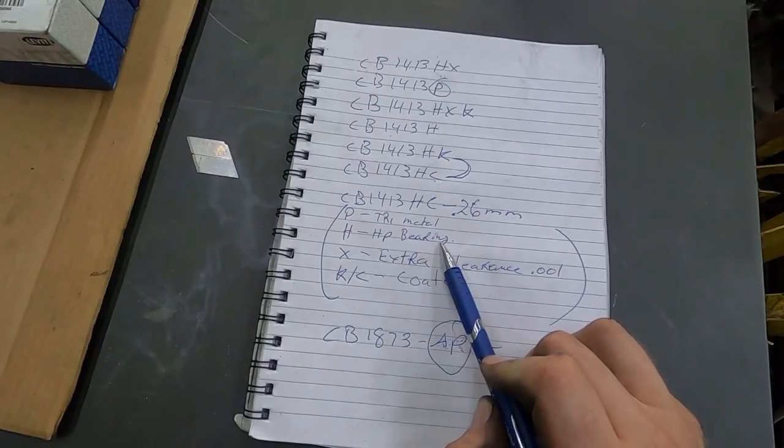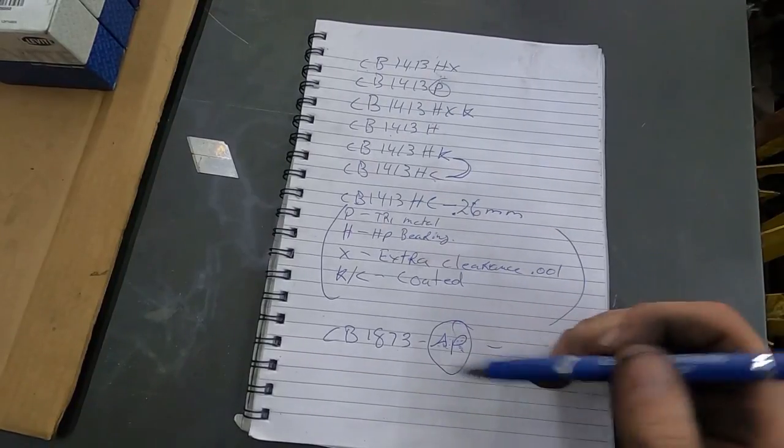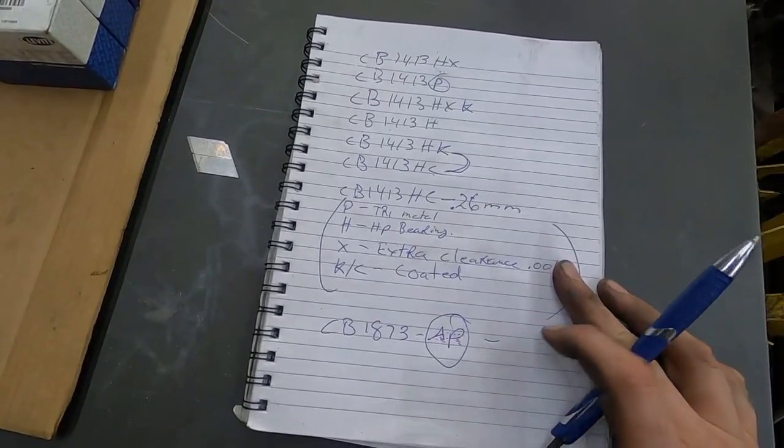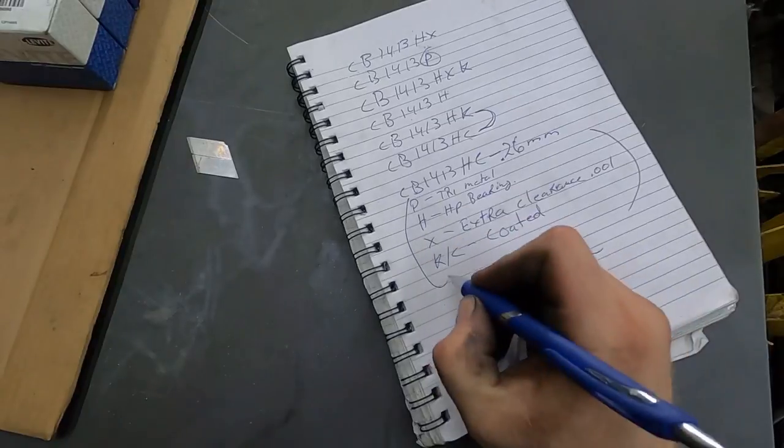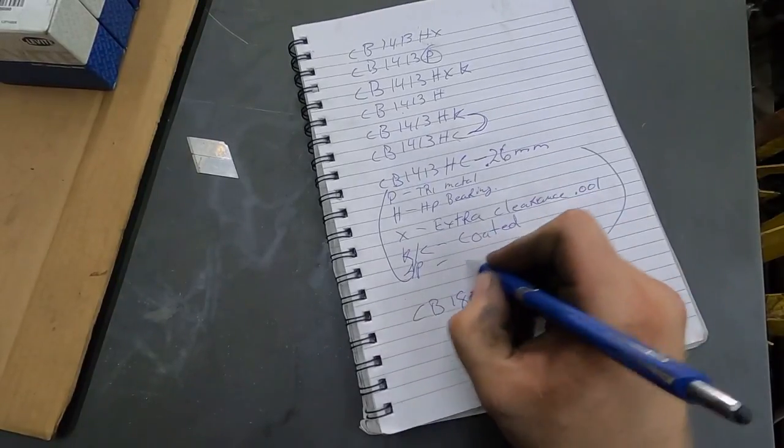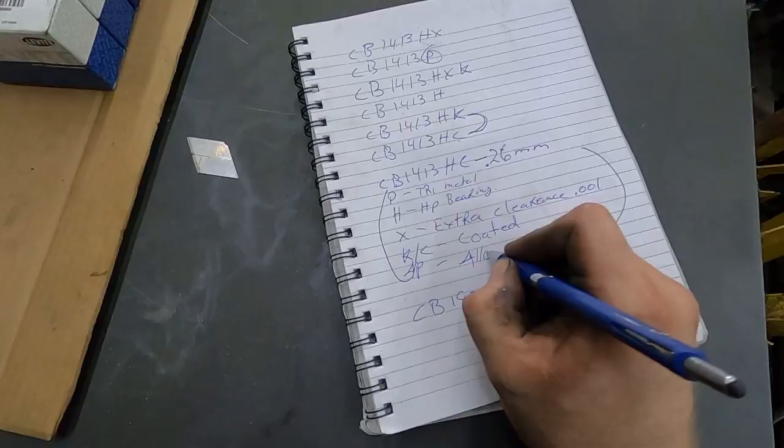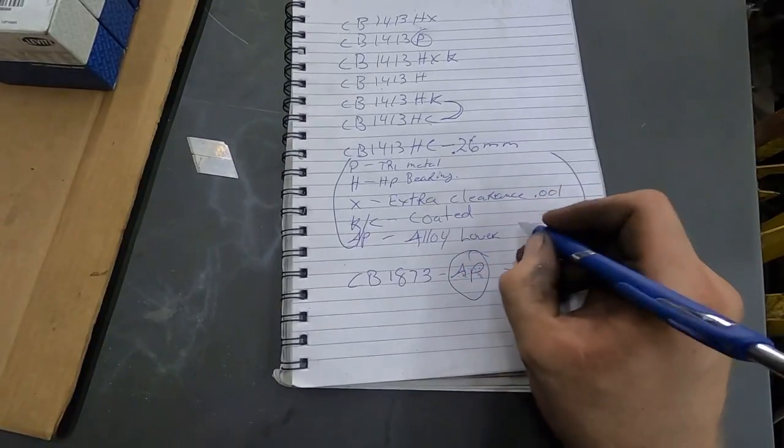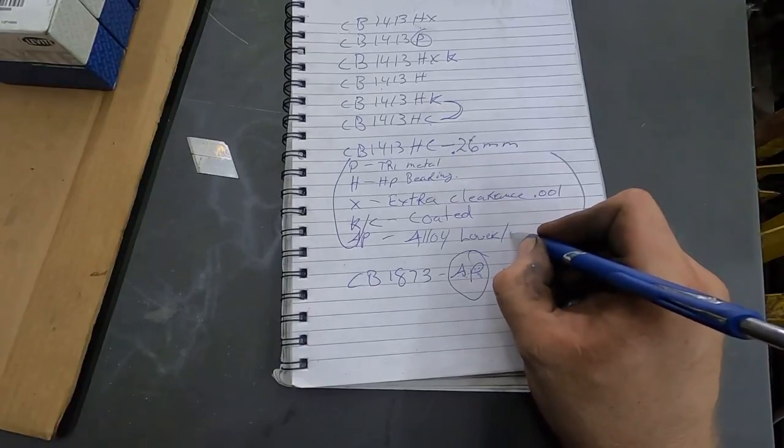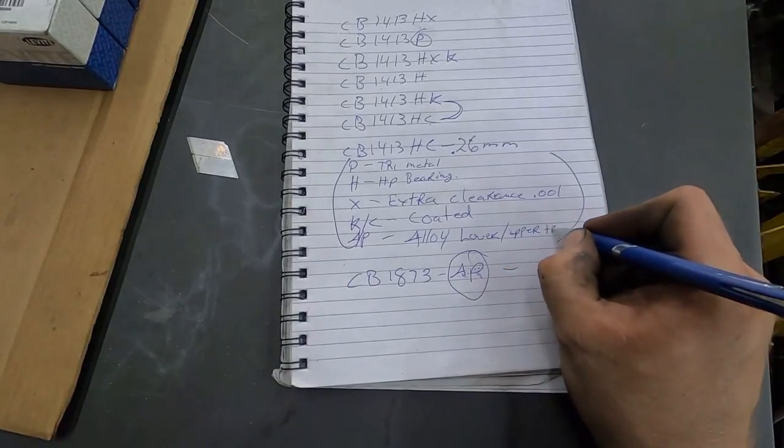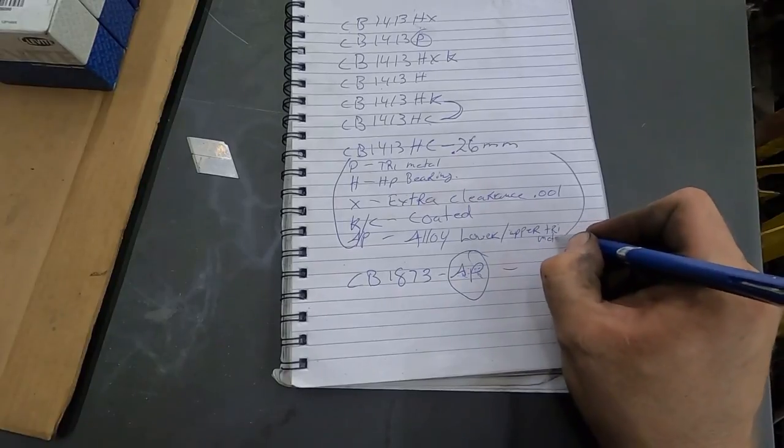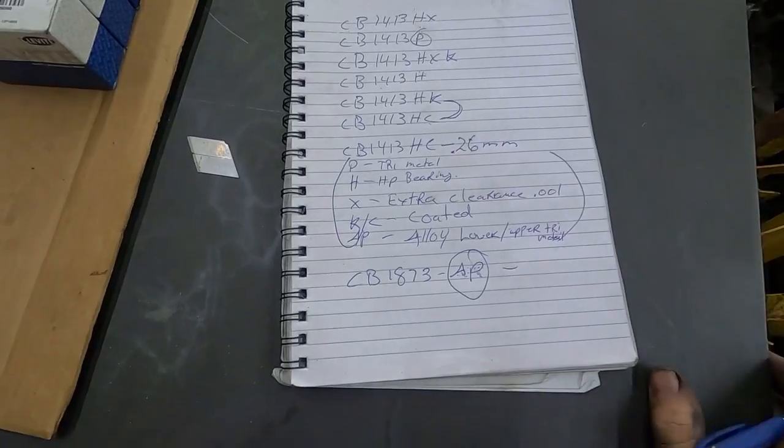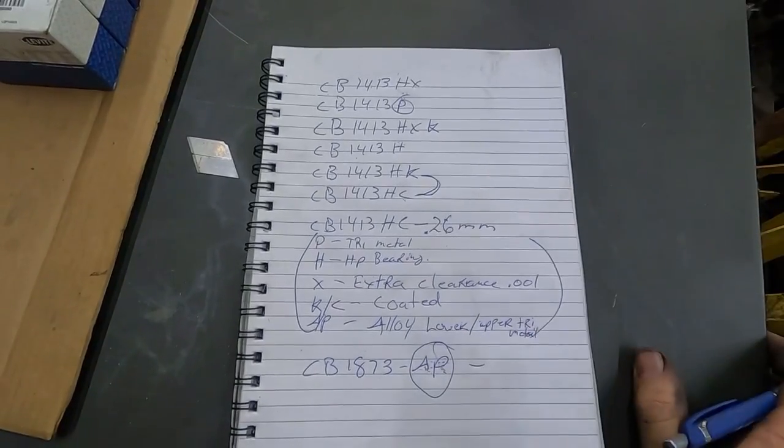I prefer using the high-performance bearings, but they're considerably more money. They're like more than double the price. So anyways, I hopefully this video helps you guys out as far as the designation side of things goes. So I guess I can write AP in there. AP alloy lower and upper tri-metal. I knew how to spell metal. There we go.